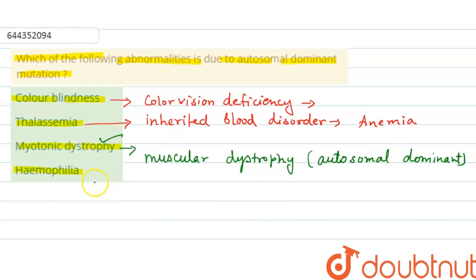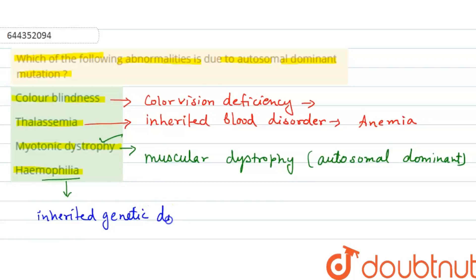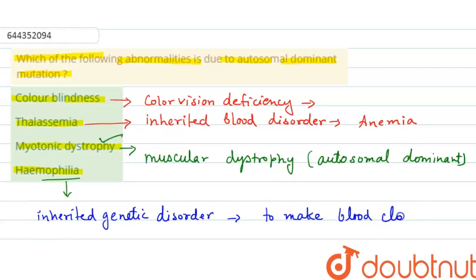The next option is hemophilia, which is an inherited genetic disorder that impairs the body's ability to make blood clots — a process needed to stop bleeding. As a result, people bleed for a longer time after an injury.